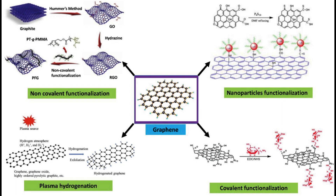Common functional groups used in covalent functionalization include carboxyl (-COOH), hydroxyl (-OH), amino (-NH2), and epoxy (-O-) groups. Covalent functionalization can improve the graphene's solubility, reactivity, and compatibility with other materials.